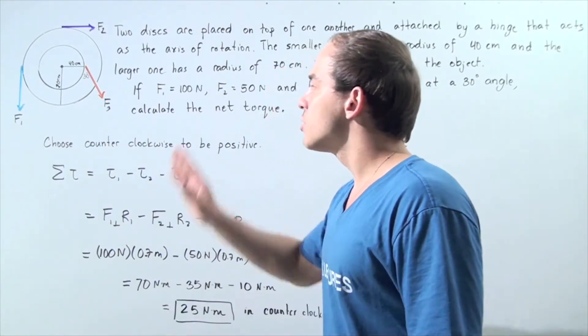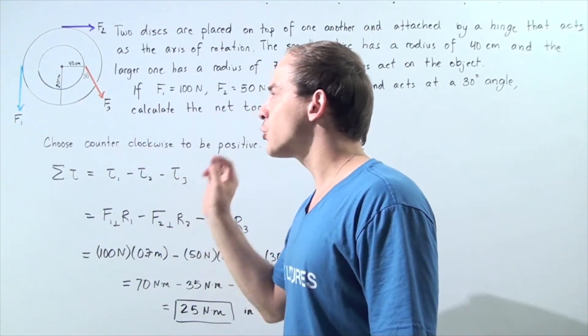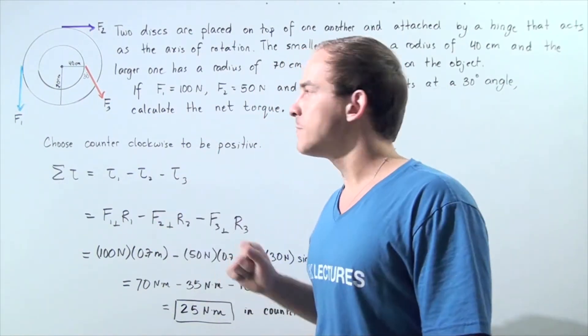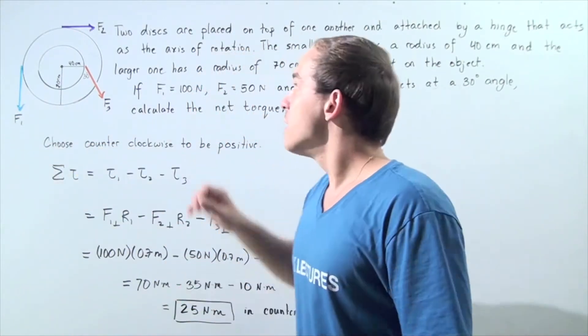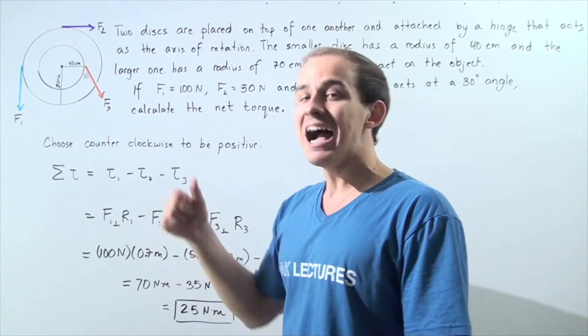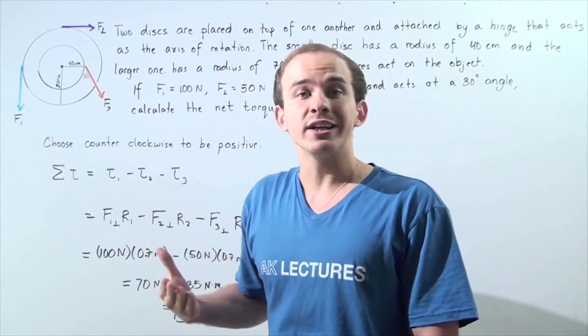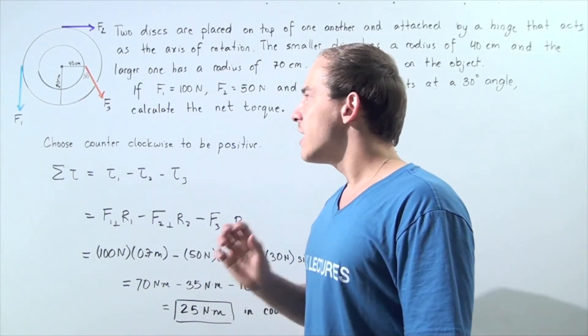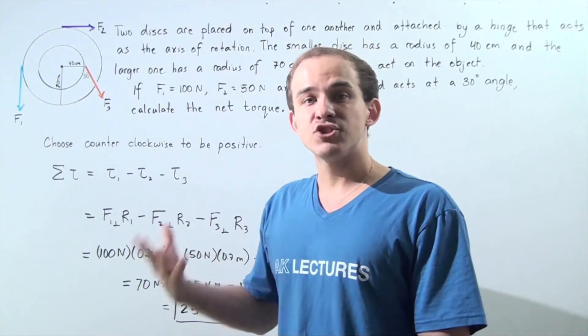So that means the only force that creates a torque pointing in the positive counterclockwise direction is force number one. Force number two and force number three point in the clockwise direction and create negative torque.